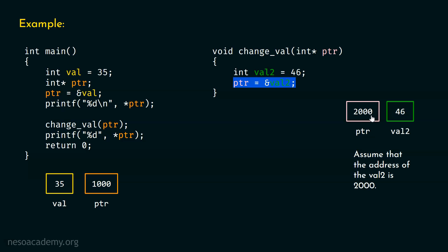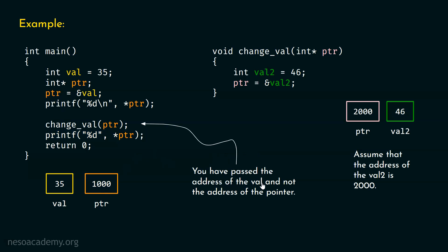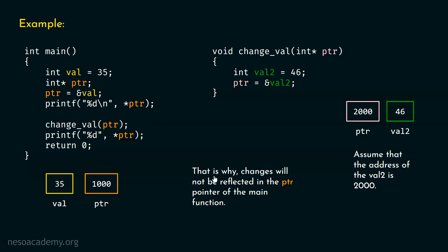We will return back to the main function, and here we have printf %d star ptr. You can clearly see that ptr is not updated, because here we are passing the value and not the address of the pointer. So changes will never reflect here. If we try to dereference this pointer, we will get the value 35 once again. Therefore the output is 3535. Here, we are not passing the address of the pointer — we are passing the value of the pointer — and if we change that local pointer, changes will never get reflected back in main.